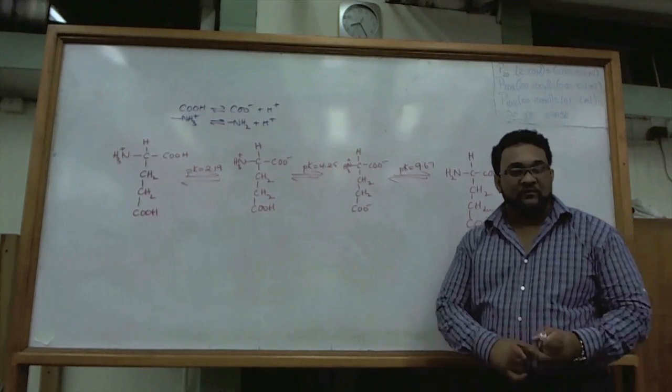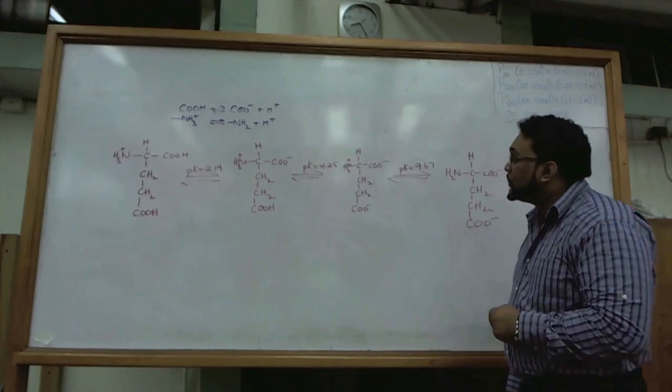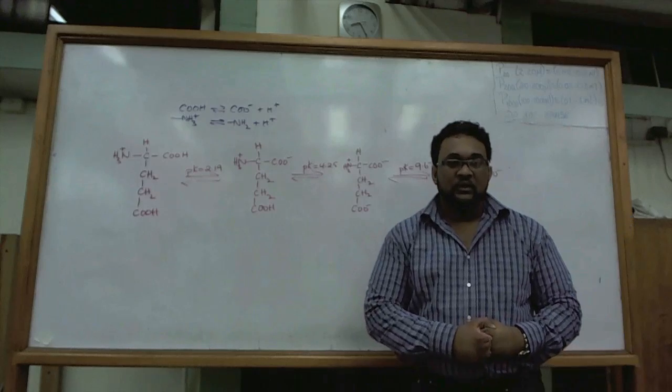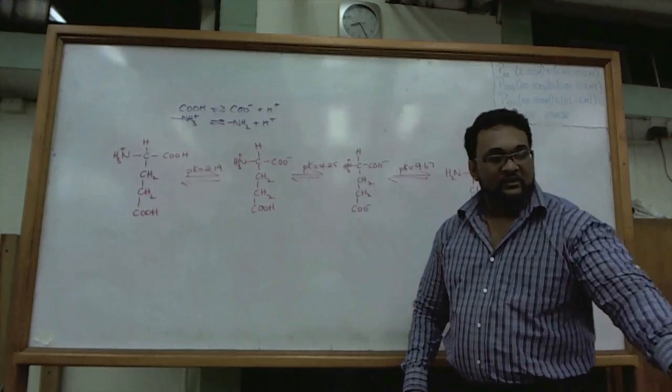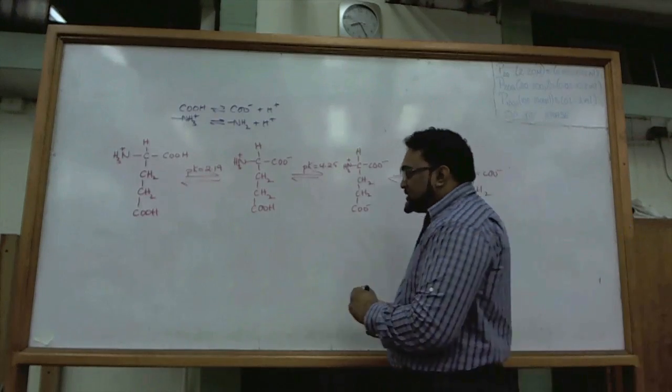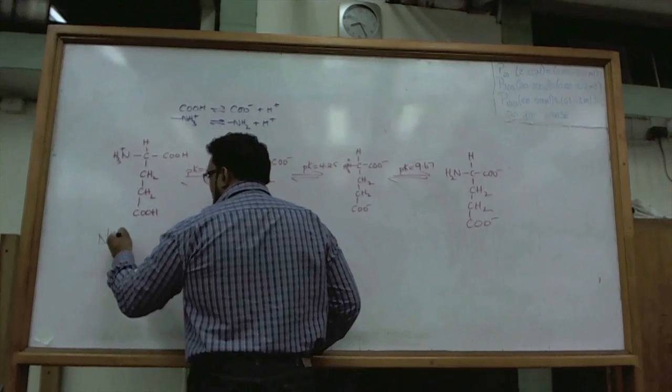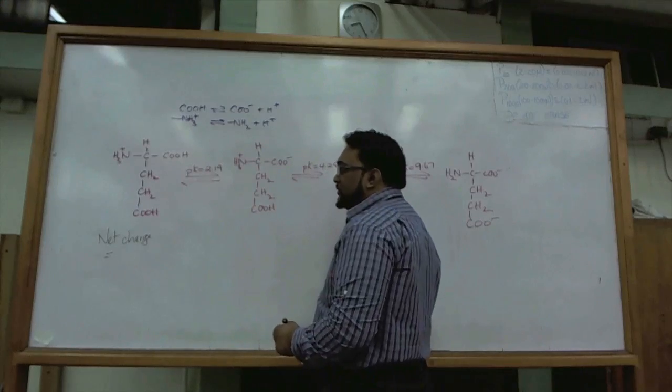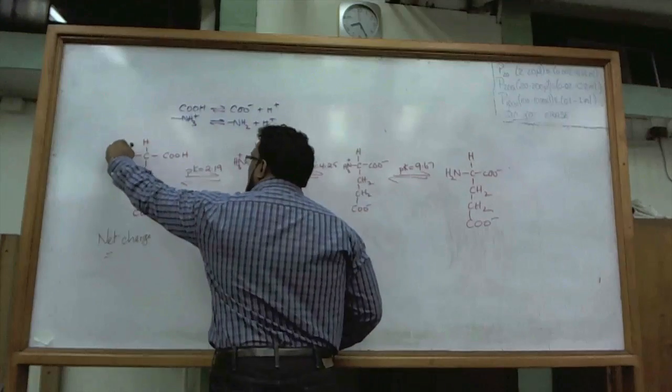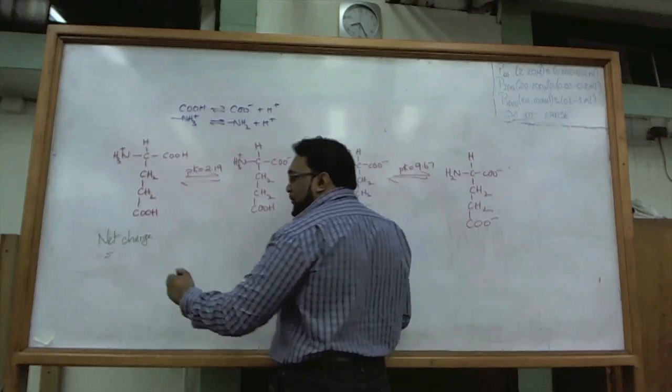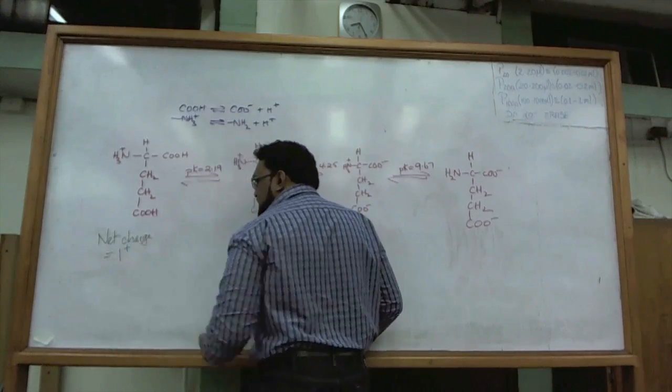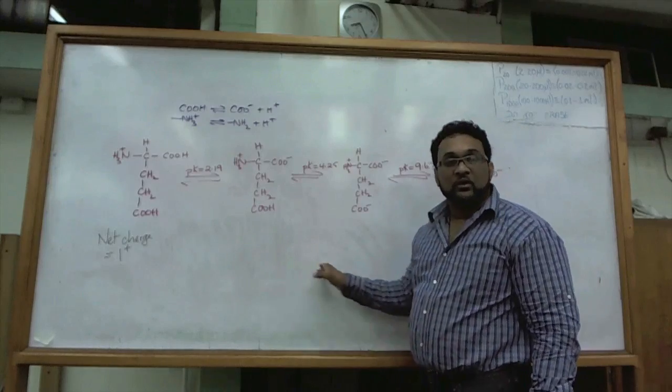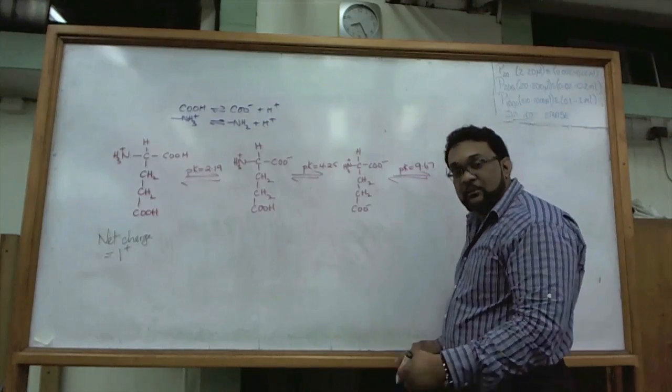We finished the first part of the assignment, which is to draw the ionizable structures. The next thing we want to do is calculate the net charge for these things. We are going to count up all the charges available. For this one, there is a plus one charge there - that is the only charge I see, so the net charge is one plus.